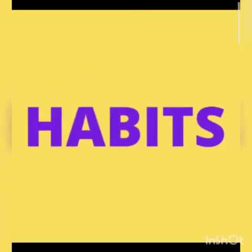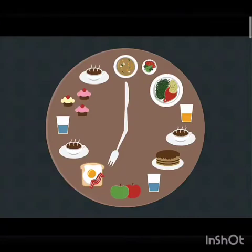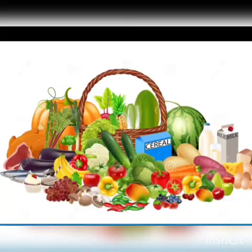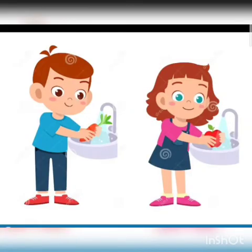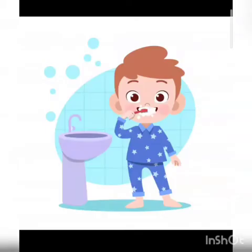Eating habits — follow these rules to make your digestive system strong. Number one: Eat regularly and at fixed times. Number two: Eat a balanced diet which includes fresh fruits, vegetables, milk, and water. Number three: Make sure the food you eat is clean and fresh. Number four: Wash your hands well before eating. Number five: Rinse your mouth after you eat.